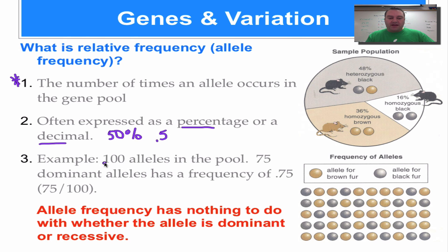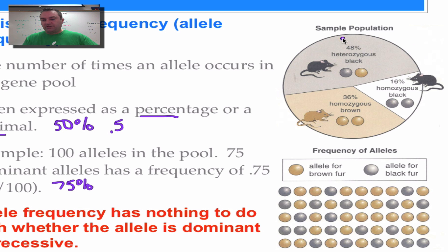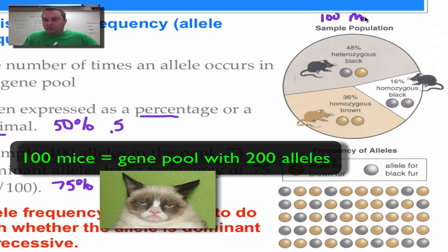Now, for example, we have 100 alleles in the gene pool. 75 of those 100 are the dominant alleles. Therefore, the frequency of the dominant allele would be 0.75, which is 75 over 100 or 75%. I want you to come over here to this picture. Now, in this case, we have 48 individuals, 36 individuals, and 16 individuals. All right. So that comes out to conveniently 100 individuals in this population.